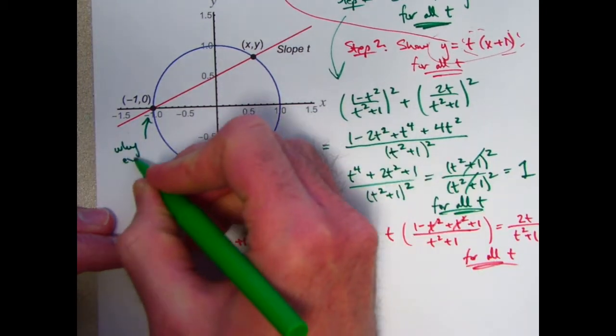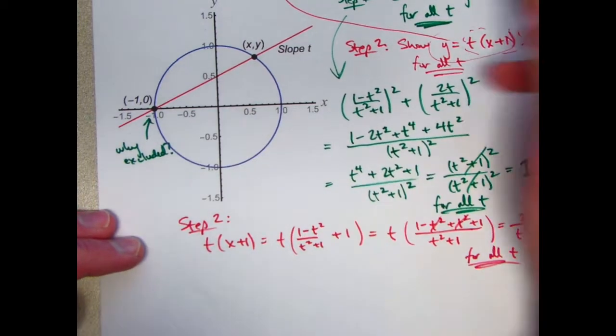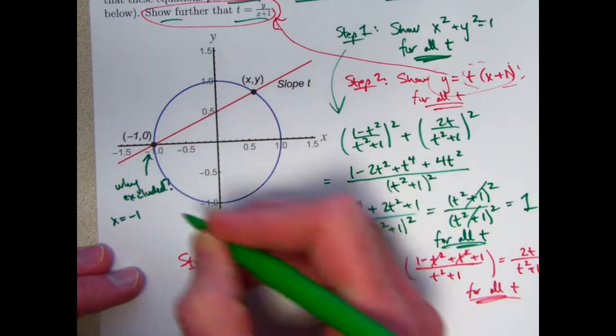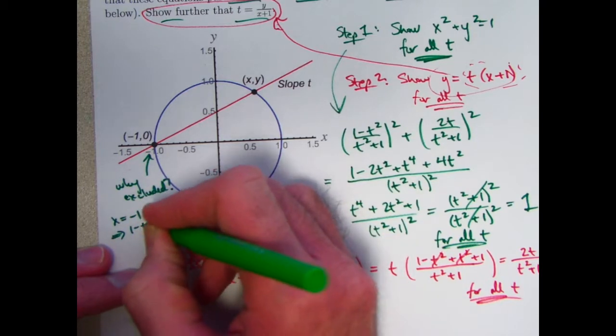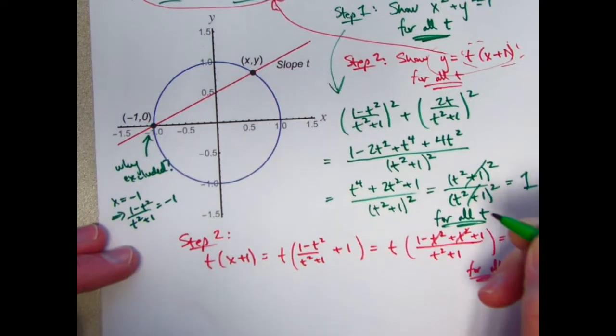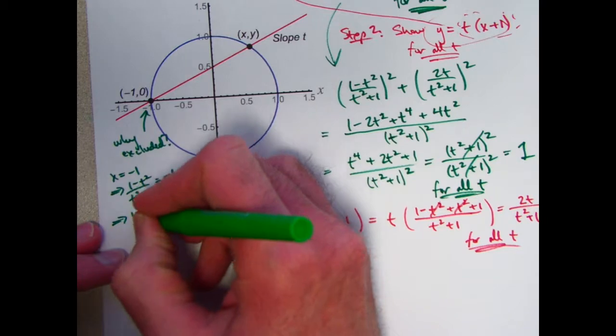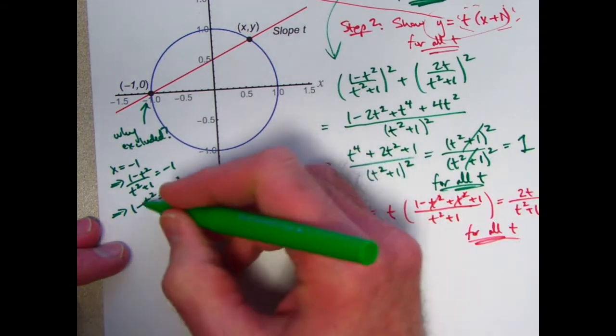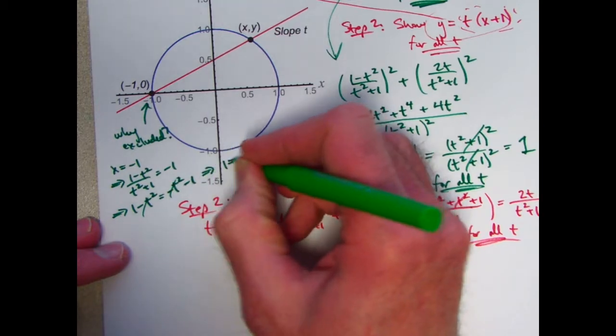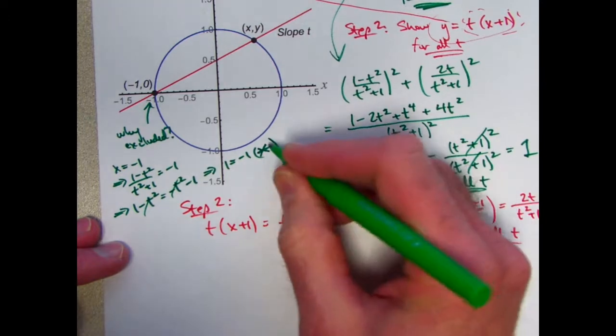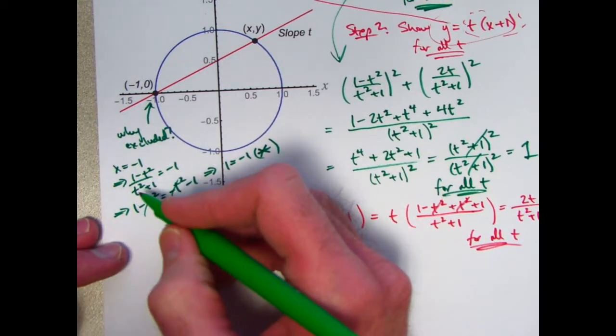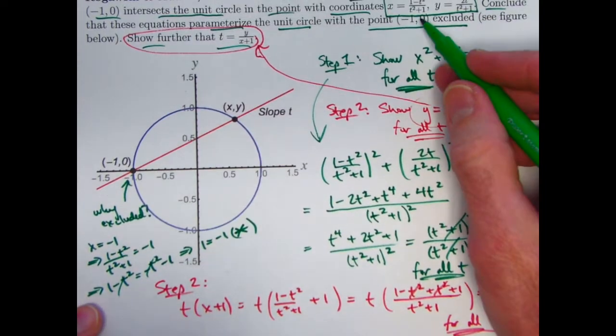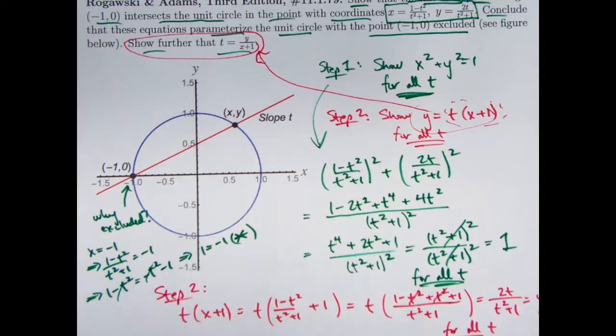Why is this excluded? And the key thing there is that x in this parametrization can never equal -1. If you assumed x equals -1, you get a contradiction. Assuming x can be -1 implies (1-t²)/(t²+1) = -1, which after multiplication of both sides by t²+1 would mean that 1-t² = -t²-1. The -t² cancel, implying that 1 = -1, which is, of course, a contradiction. This symbol means contradiction. The assumption that x is -1 in the parametrization leads to a contradiction that 1 equals -1. That's not true. So this assumption must be false. x cannot equal -1 for this parametrization. So definitely this point is excluded.